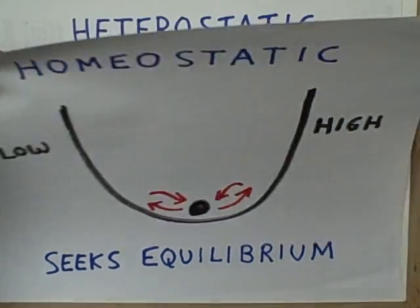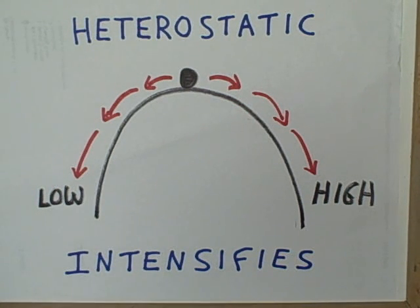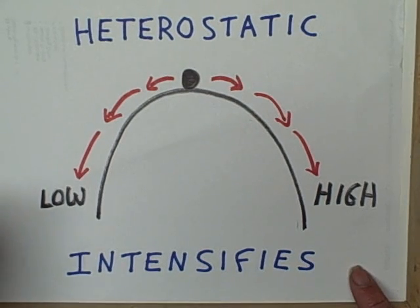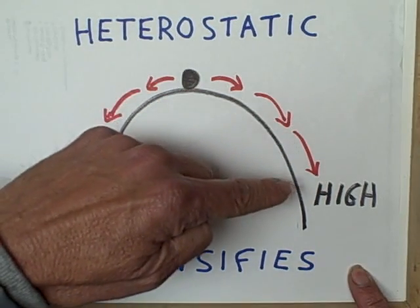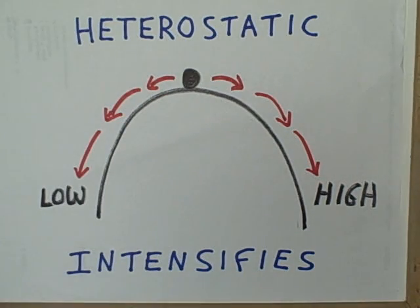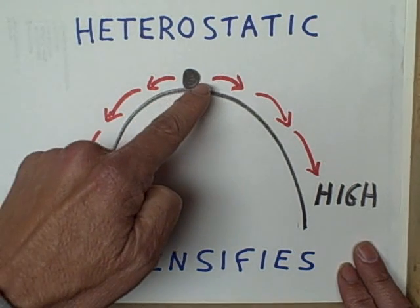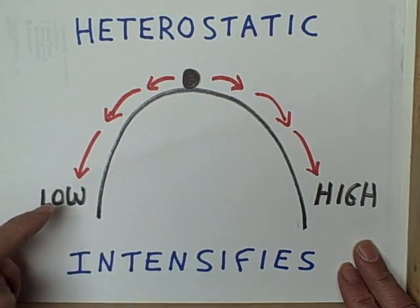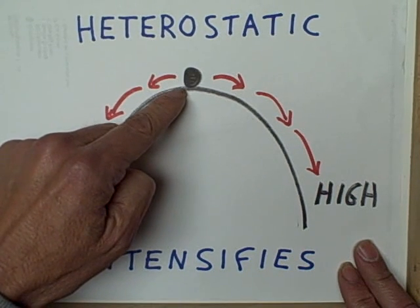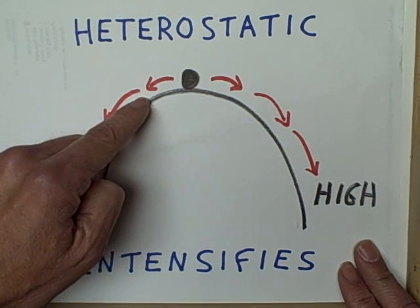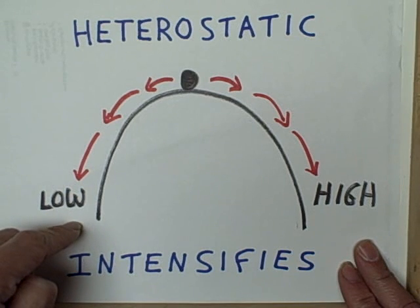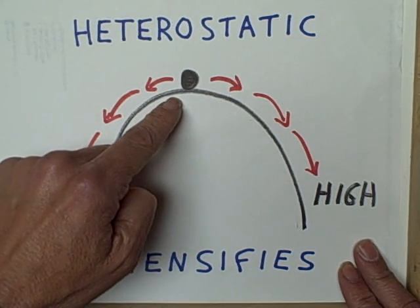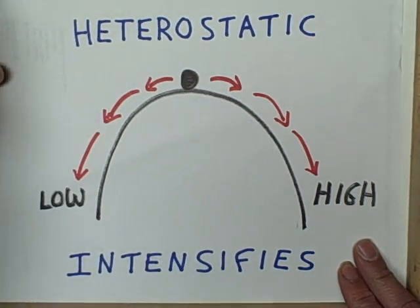A different kind of algorithm is the heterostatic, which intensifies any move away from the set point. Imagine now that our soup bowl has been turned upside down and the little marble has been placed on top of it, balancing very precariously. If it starts to move slightly in one direction, the force of gravity will intensify that move and make it go higher and higher to that side. On the other hand, if the marble starts to go a little toward the other side, gravity will intensify it and make it go lower and lower. Whichever way it moves in the beginning, the heterostatic system will increase and intensify its movement.